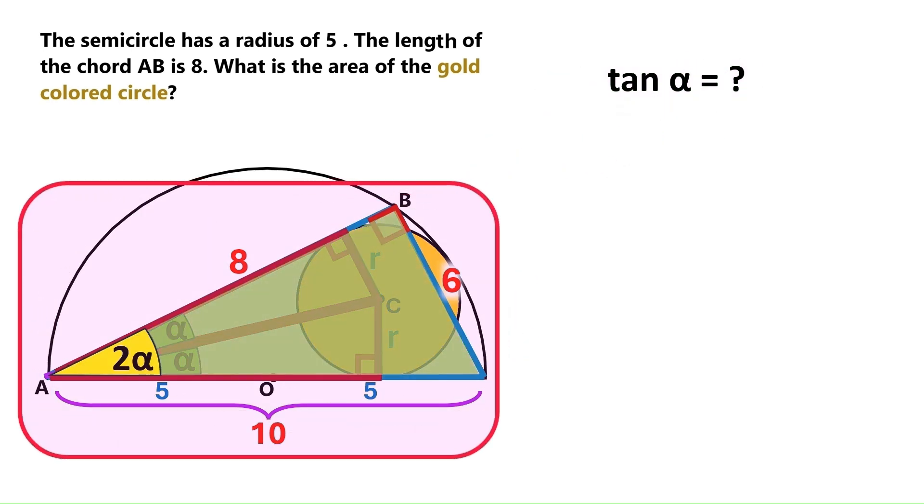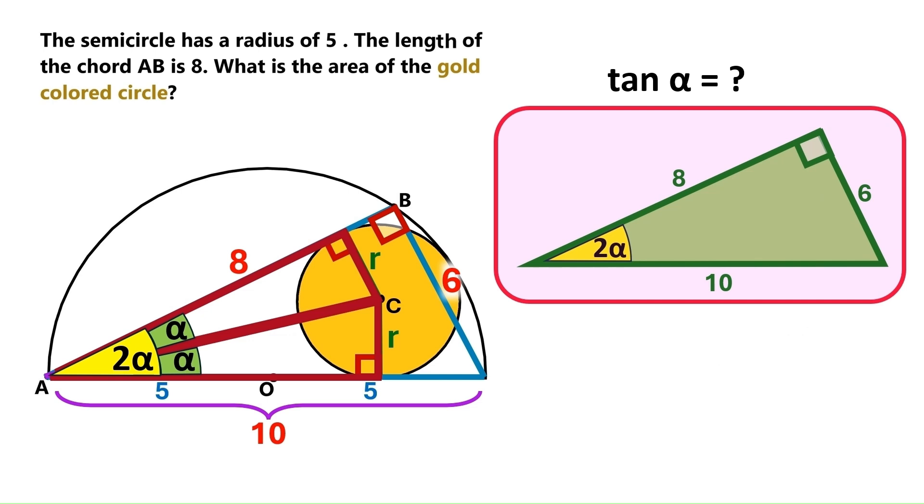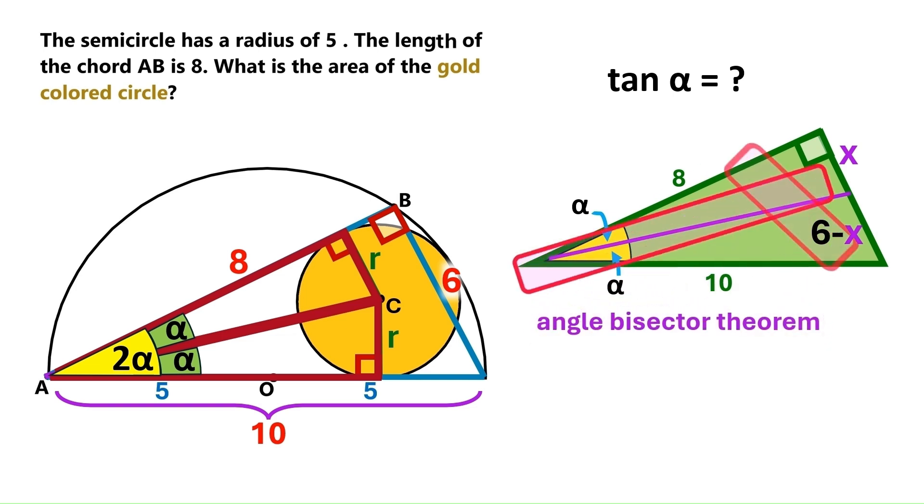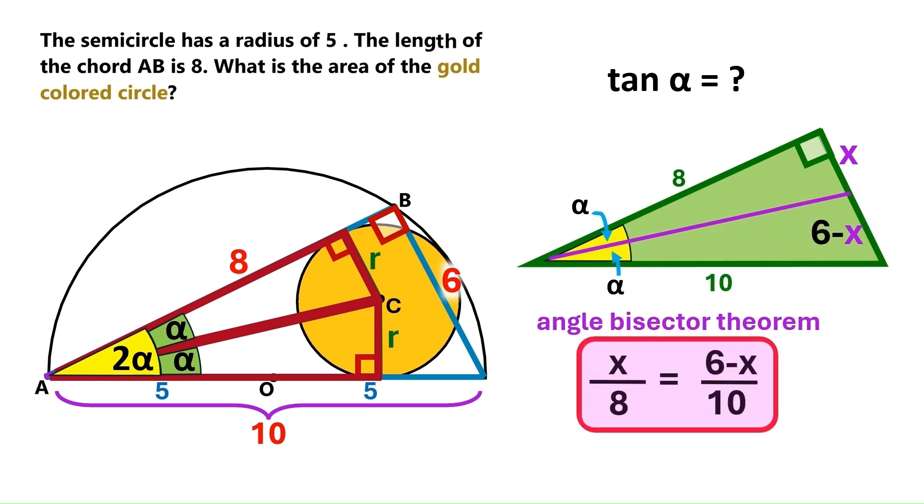Let's go back to this big right triangle and copy it over here. Now let's put this angle bisector in it and let this distance be x, and this distance down here is obviously 6 minus x. Now, according to the angle bisector theorem, the proportion between these two distances must be equal to the proportion between these two distances. So we can put it as an equation like this, which simplifies to x equals 8 over 3.